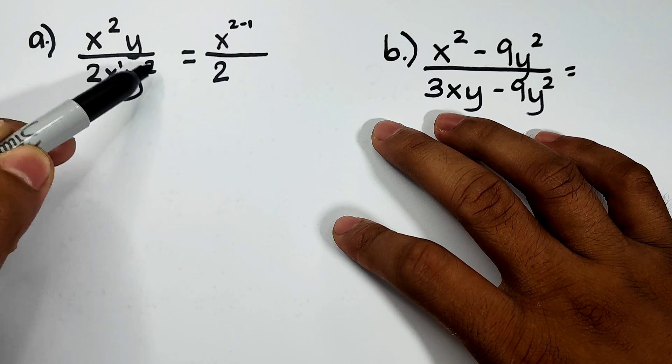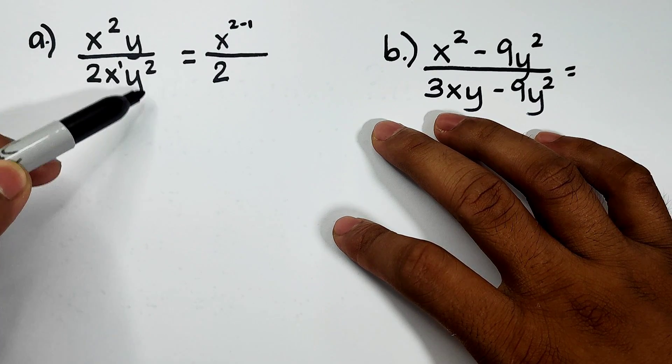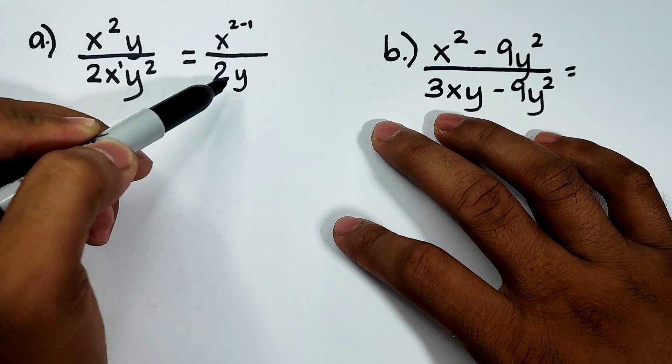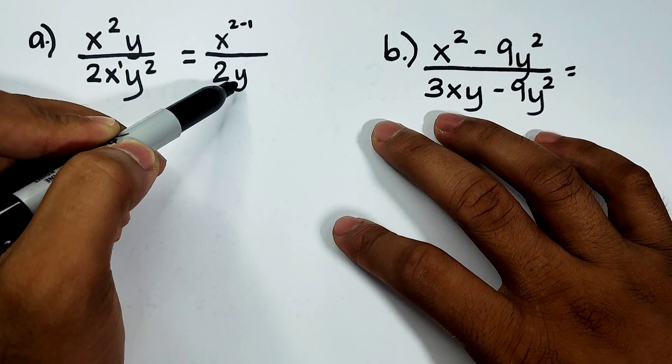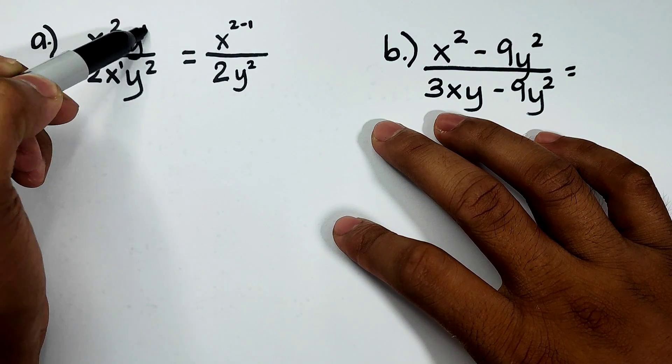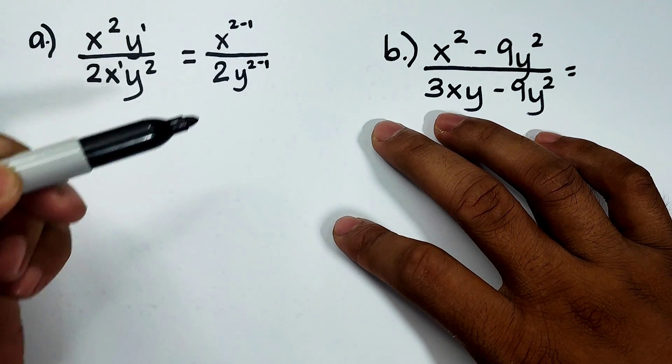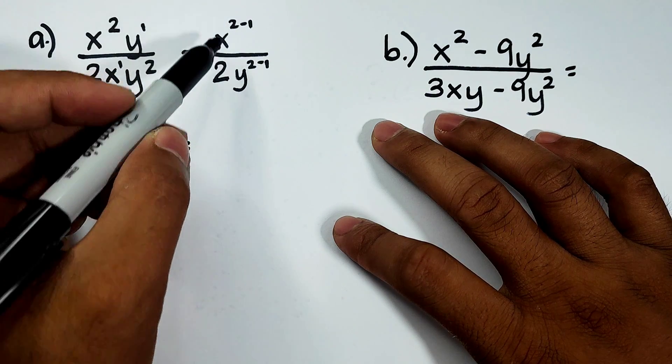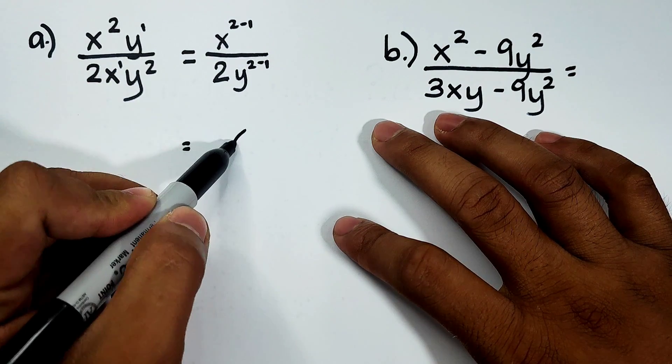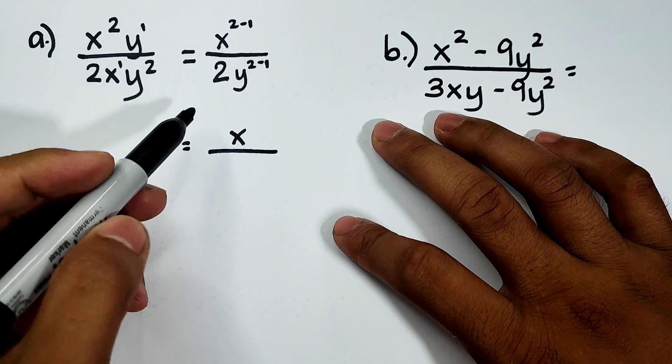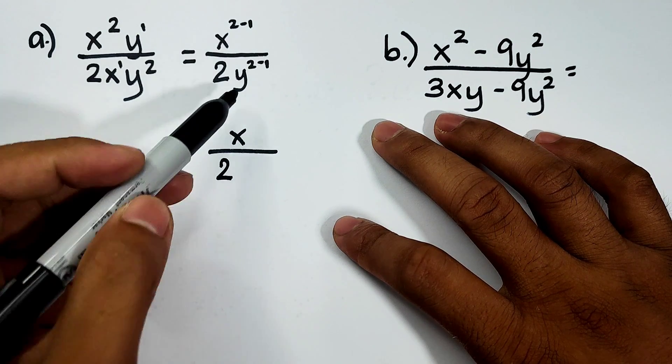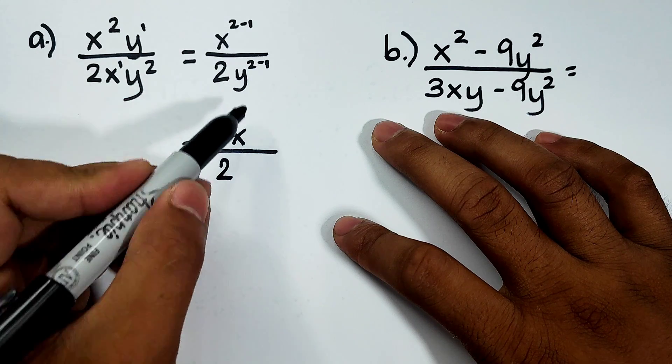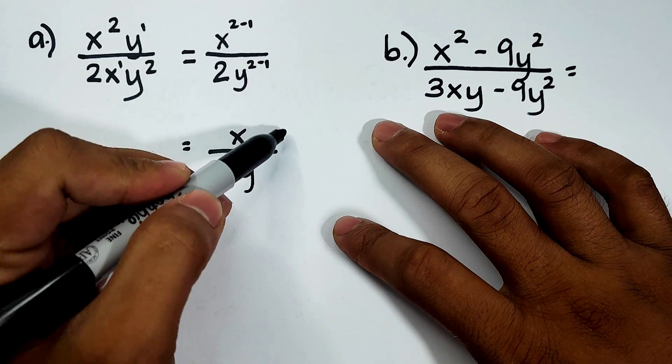And as for the y variable, as you can see, greater yung exponent ng y sa denominator. Meaning, dito mangyayari yung subtraction of exponent. y raised to 2 minus 1. When we simplify this, it will give us x raised to 2 minus 1, and that is simply x over 2y. So this is the final answer.